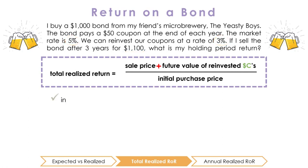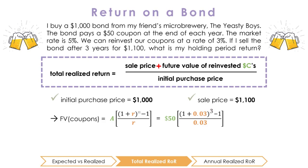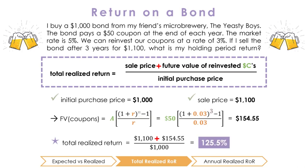Suppose I buy a $1,000 bond from my friend's microbrewery called the Yeasty Boys. The bond pays a $50 coupon at the end of each year. The market rate is 5%, and we can reinvest our coupons at a rate of 3%. If I sell the bond after three years for $1,100, what is my holding period return? We know that we initially paid $1,000 for the investment and sold it for $1,100. Using a future value annuity formula to calculate the value of our reinvested $50 coupons every year for three years at 3% interest, the total value of that coupon investment at the end of three years is $154.55. Thus, our gross holding period return is ($1,100 + $154.55) / $1,000, or 125.5%.